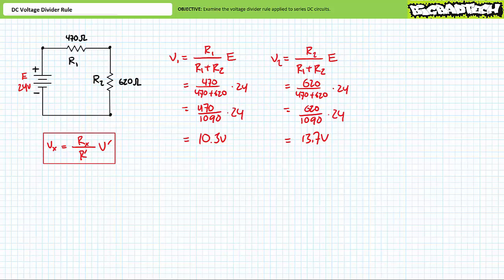Similarly, the DC voltage divider rule set up to solve for V2 equals R2 divided by (R1 plus R2) times supply voltage E. Substituting in our given values quickly and directly yields V2 to be the remaining 13.7 volts. Two quick applications of the voltage divider rule yielded our desired results without any delay, toil, or tears.